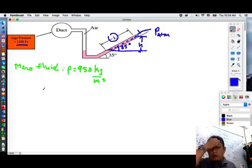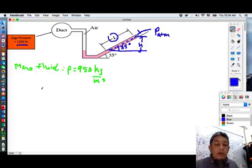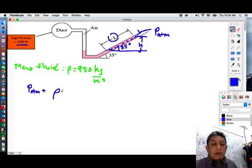So let's work out the equation to find out the pressure. I have P atmospheric plus rho, the density of that manometric fluid, times G times H is equal to pressure in the duct.